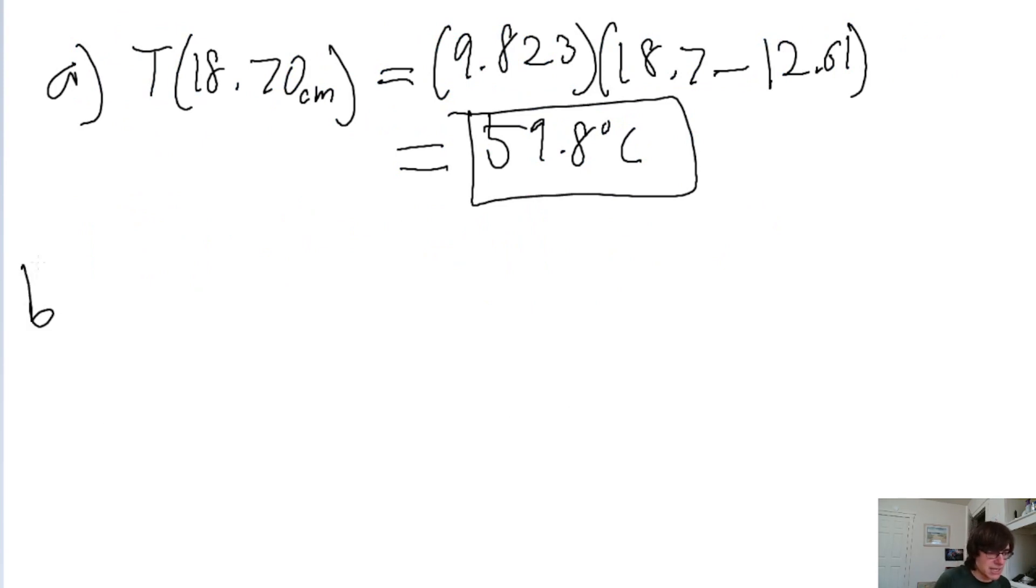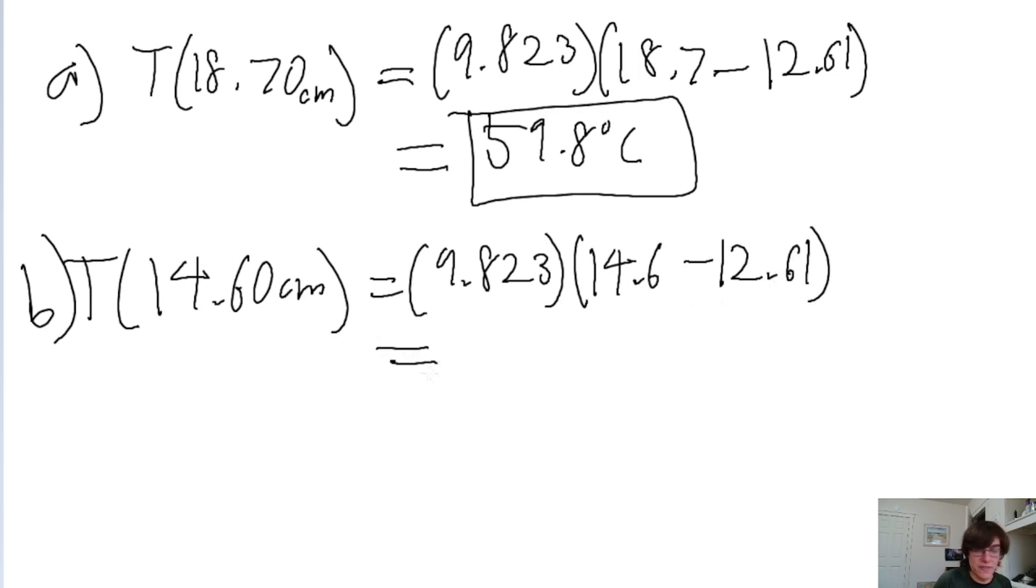Now let's do the same thing with part B, where the length we're given is 14.6 centimeters. So that's 9.823 times 14.6 minus 12.61. If we put that into a calculator, then we find a temperature of 19.5 degrees Celsius.